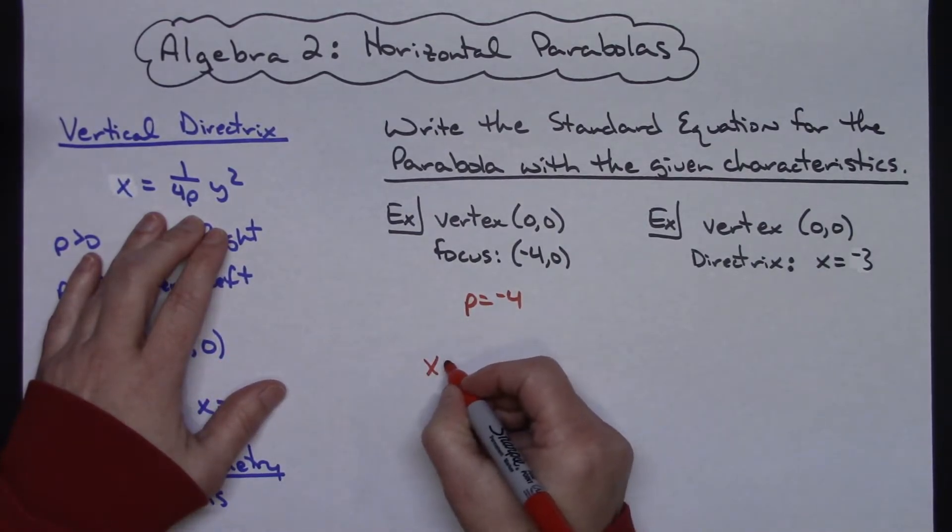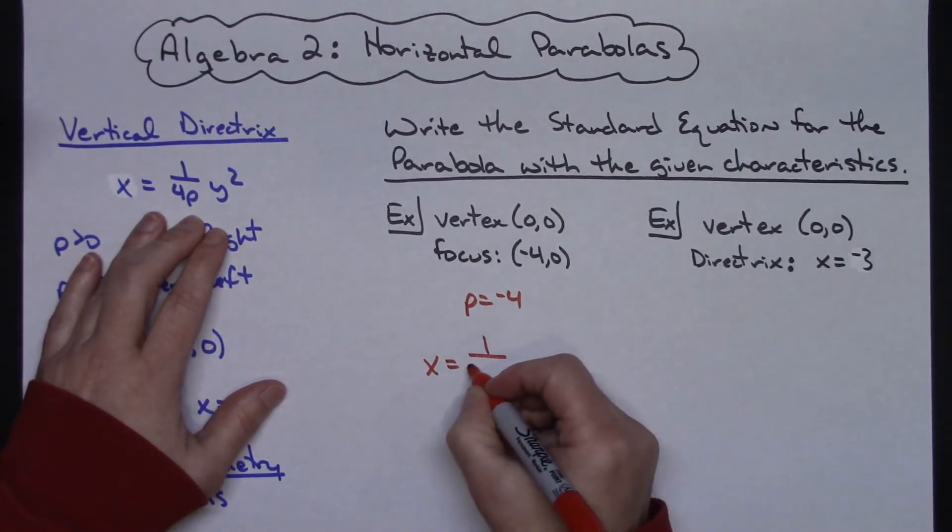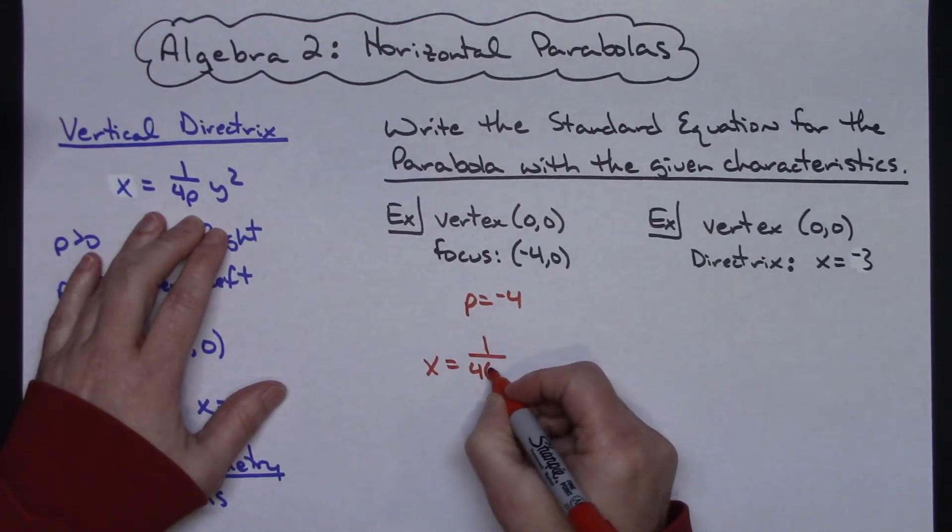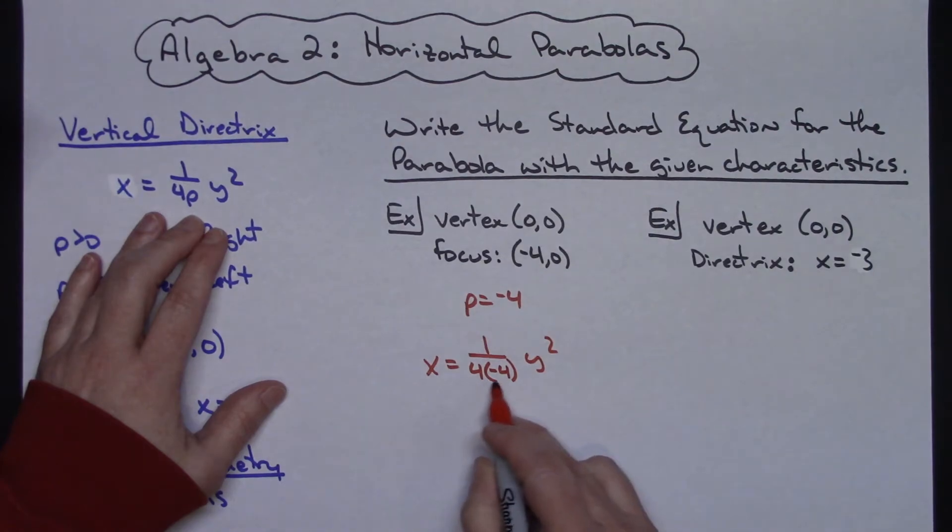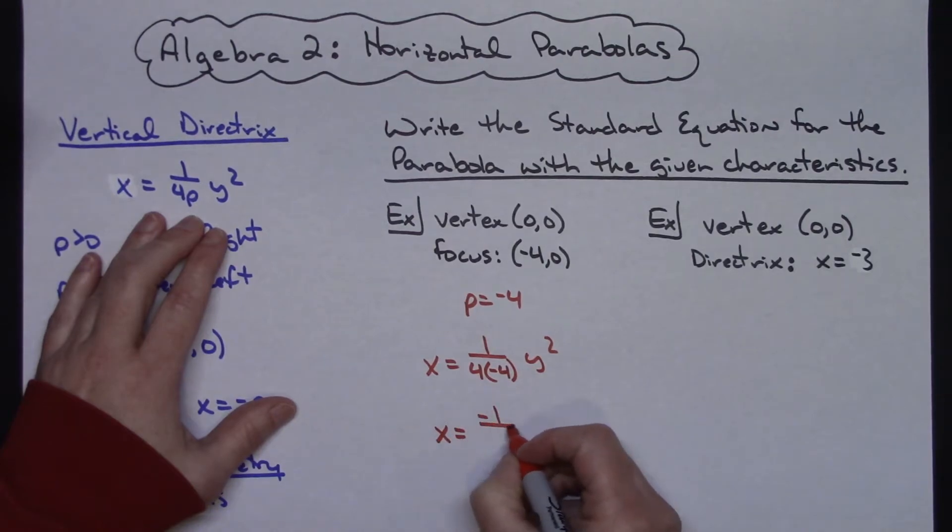So x equals 1 over 4 times, I'm going to replace p with what it is, and then y squared right there. Multiplying on the bottom I would get a negative 16. So my equation is x equals negative 1 over 16 y squared.